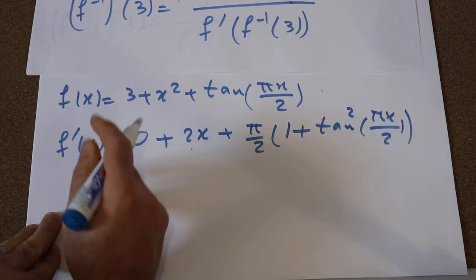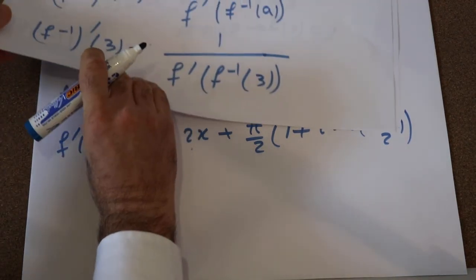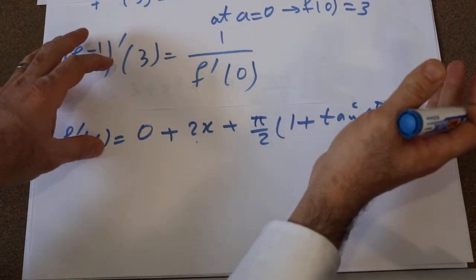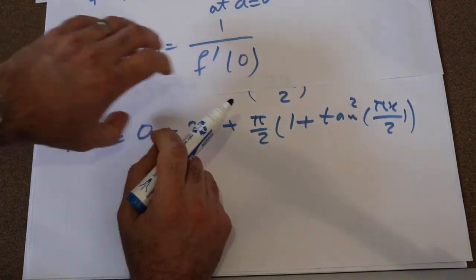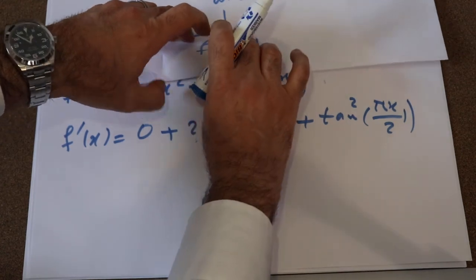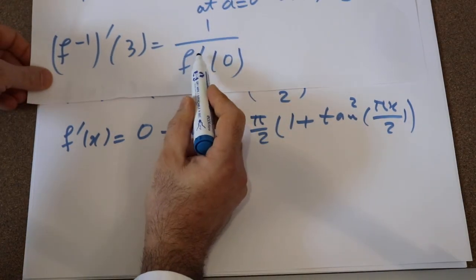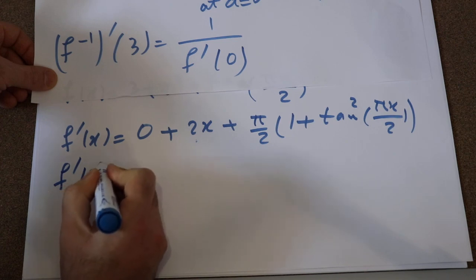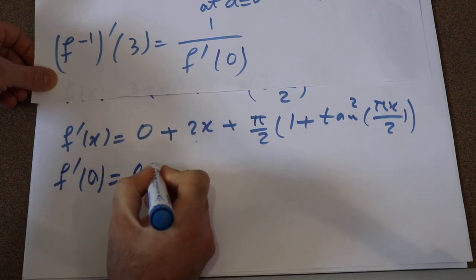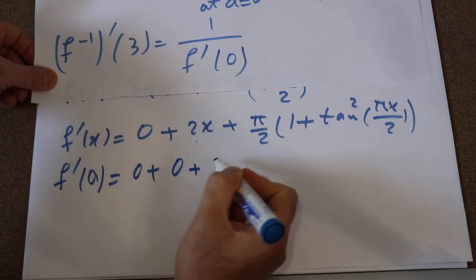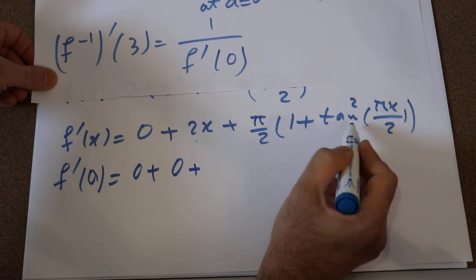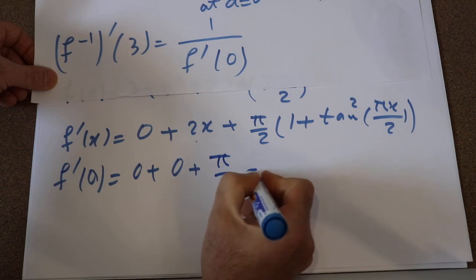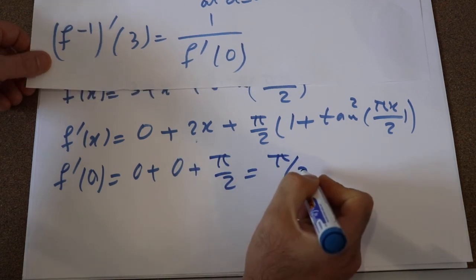Remember, our goal was to calculate the derivative of f at point equal to 0. So f prime(0) equals 0 plus 2 times 0, which is 0, plus π/2 times (1 plus tangent²(0)), and tangent squared 0 is 0, so that gives π/2 times 1, which equals π/2.